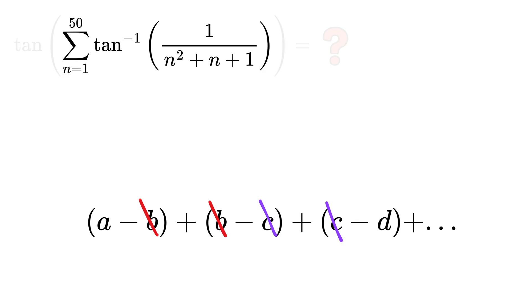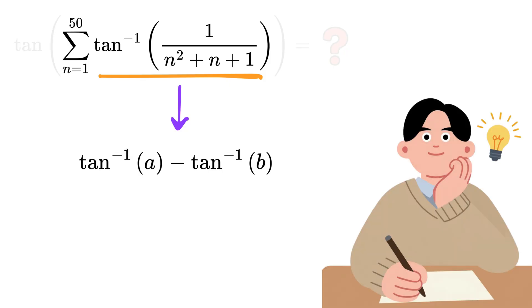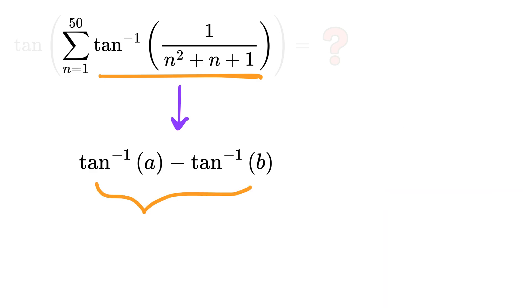Now think about how any cancellation can even happen here, and the only way this is possible is when each tangent inverse term can be rewritten as a difference of two tangent inverse terms. The very next step is to recall the standard formula for tangent inverse of a minus tangent inverse of b, which tells us that this difference is equal to the tangent inverse of the difference of a and b divided by one plus the product of a and b.